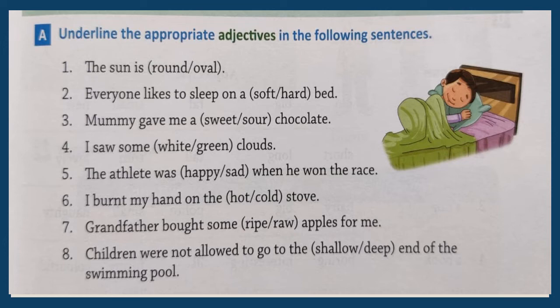Now here children, can you see the sentences? In each one of them there are two words given in the brackets. You have to choose the correct adjective that fits the sentence. Number one: The sun is round or oval? Yes, the sun is round, so let's underline round. Number two: Everyone likes to sleep on a soft or hard bed. What kind of bed do you like to sleep on? Soft, isn't it? So let's underline soft.